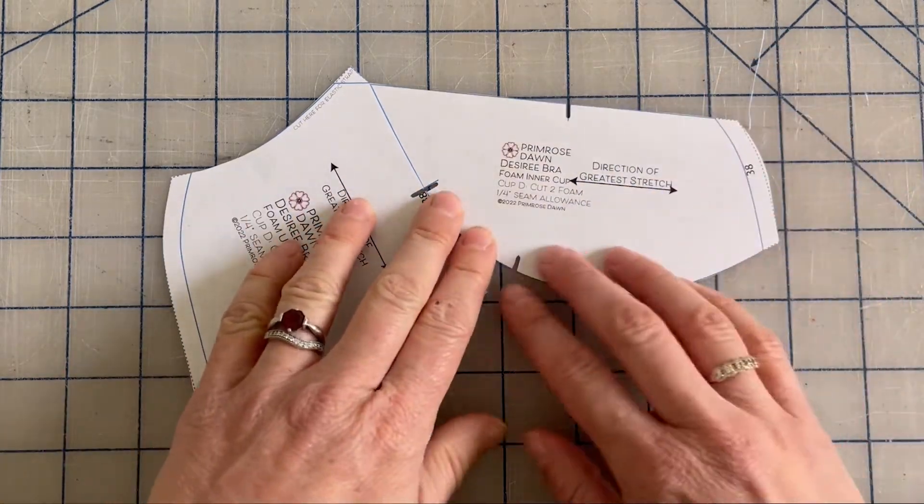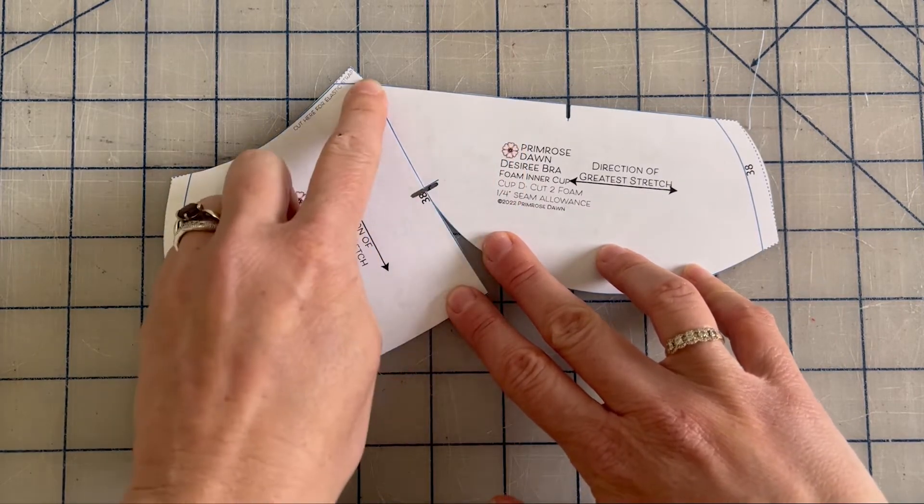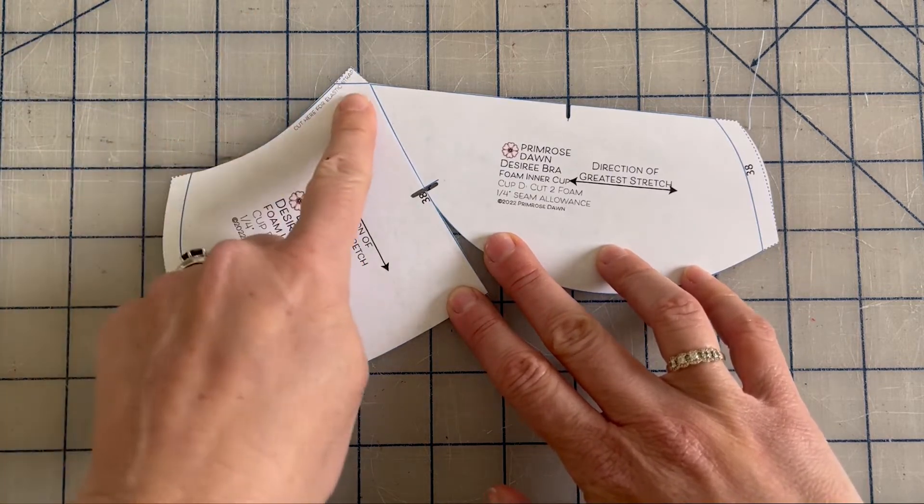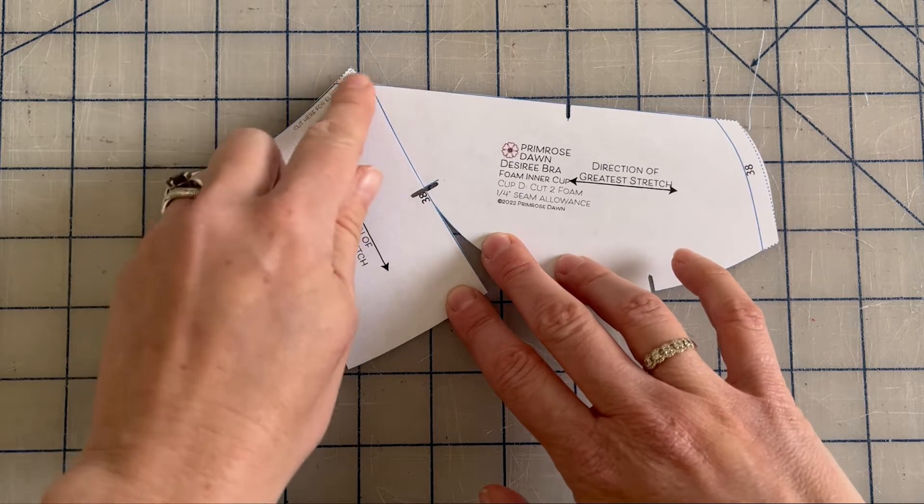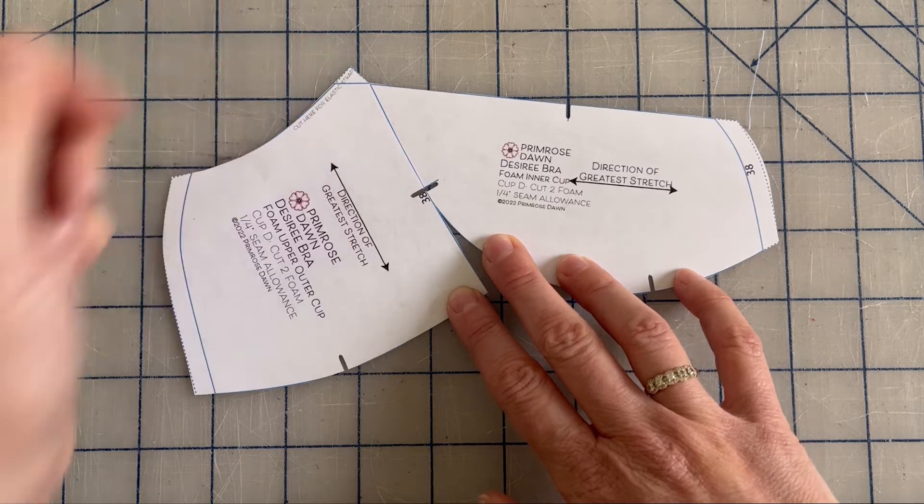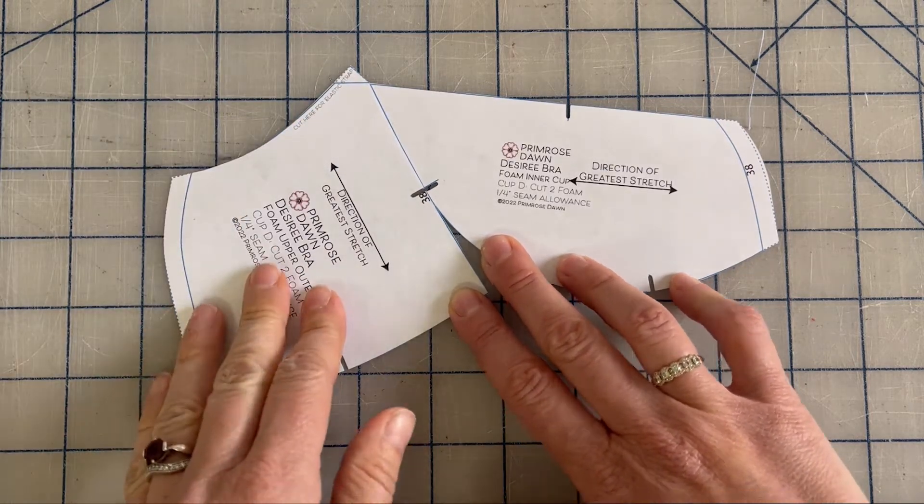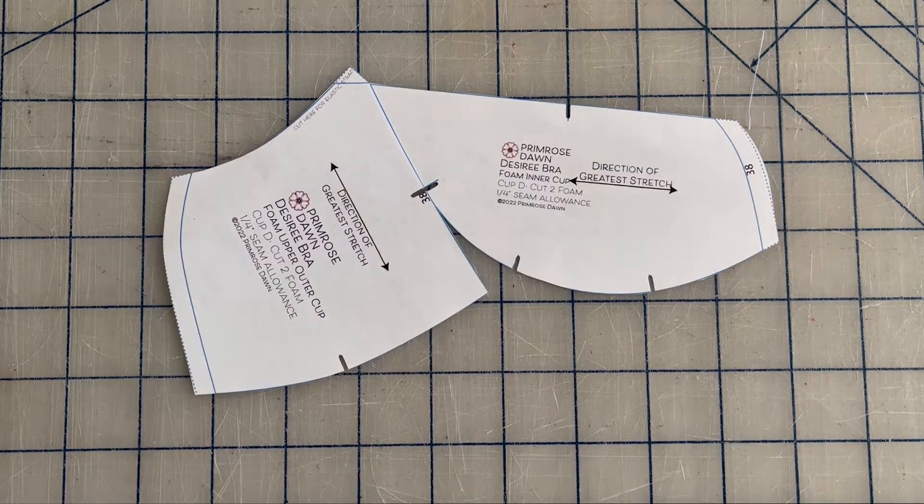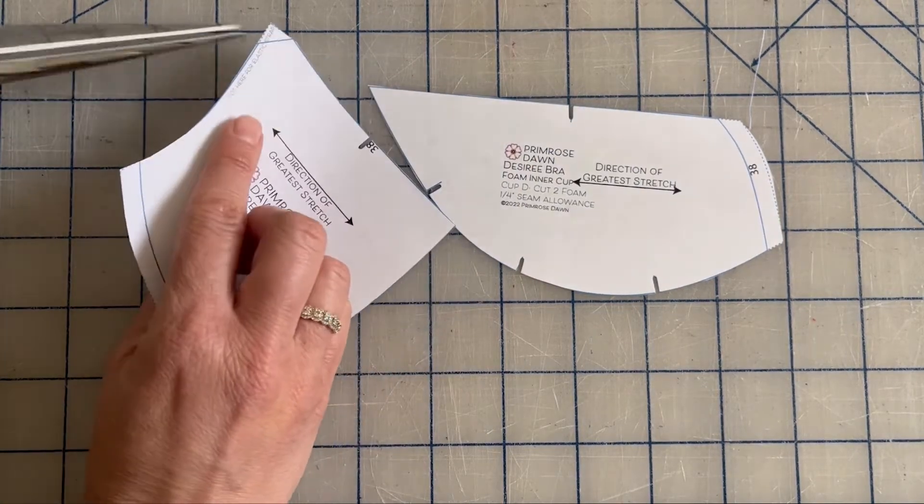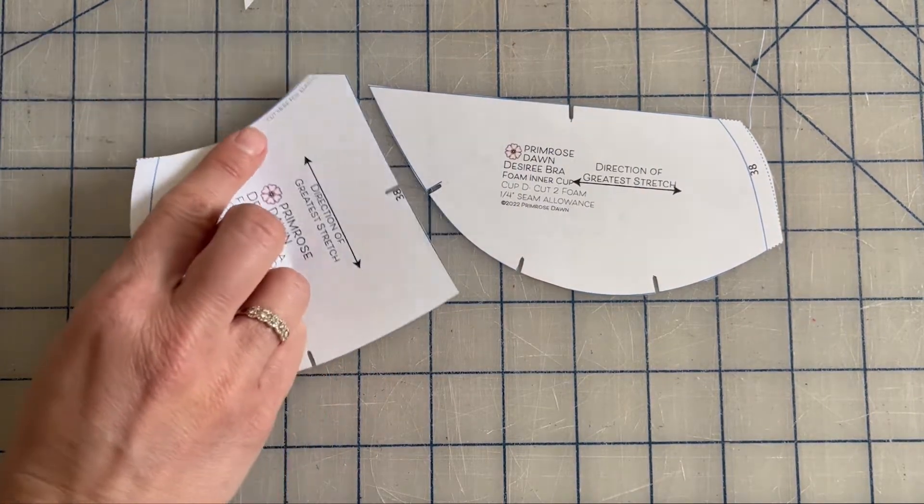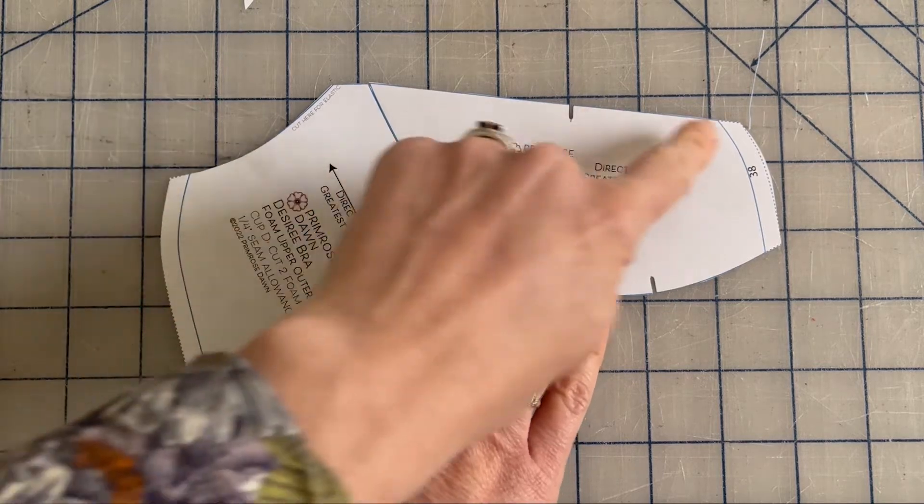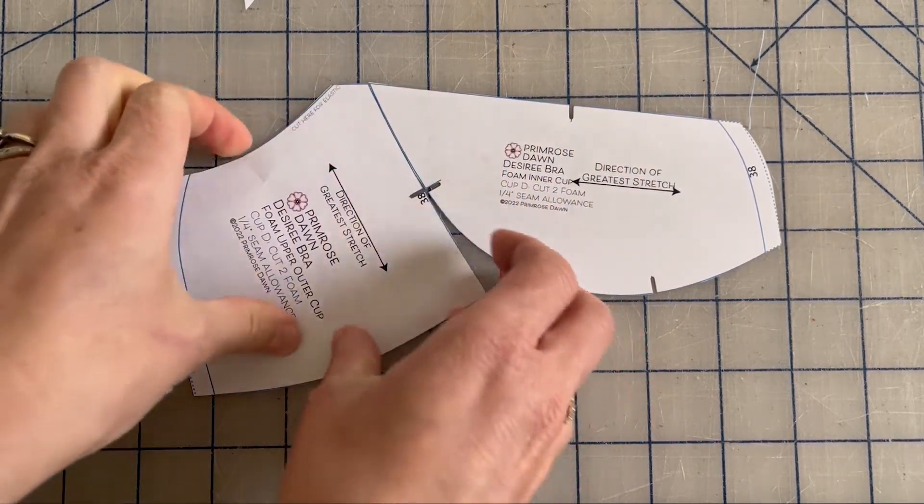So all we need to do for the foam cup is remove this strap attachment. Instead of sewing the strap to the right side of the cup with the seam here, you'll be placing the raw edge of the strap behind the cup and adding a bar tack to attach it. So we're just going to be attaching the strap in a different method. All we need to do is just cut off this seam allowance here for the strap attachment.